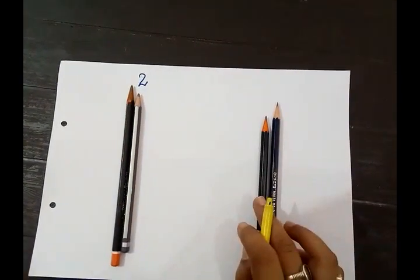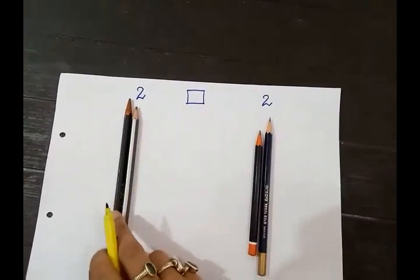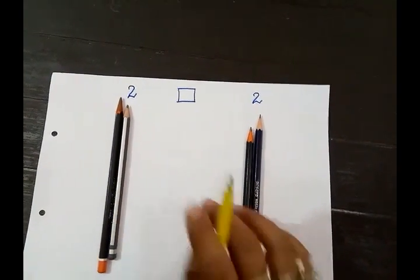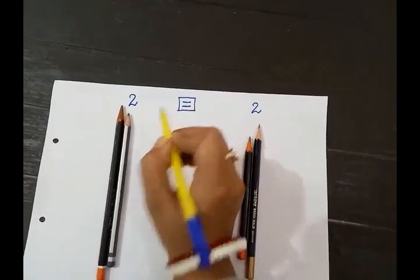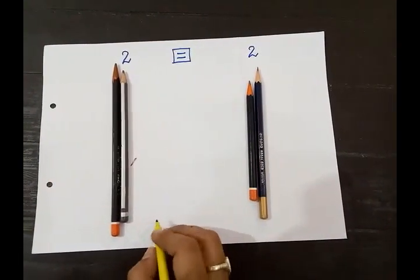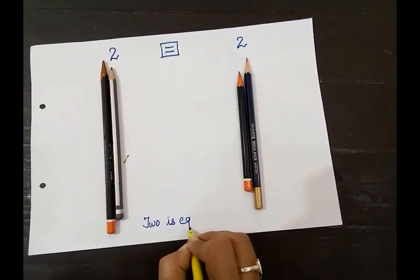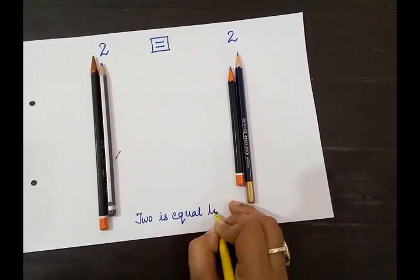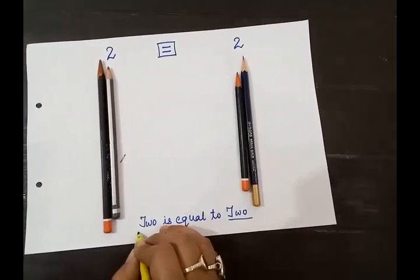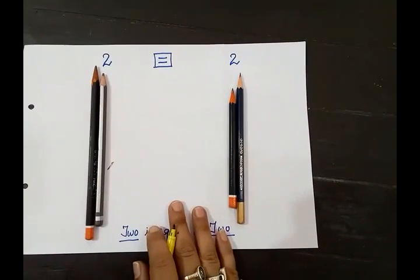Now the example for equal to. How many pencils? 1, 2 — we write 2. How many pencils on the other side? 1, 2 — we write 2. Both sides have equal pencils — 2 pencils here and 2 pencils there. So we put an equal to sign. We read this as: 2 is equal to 2. Understood students?